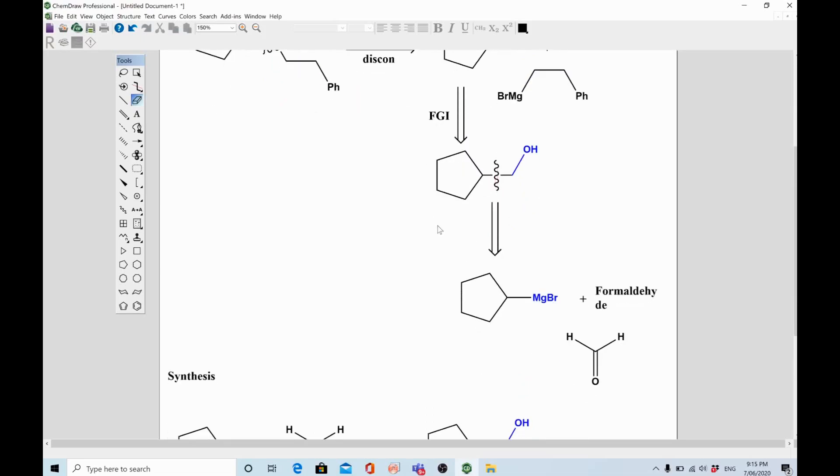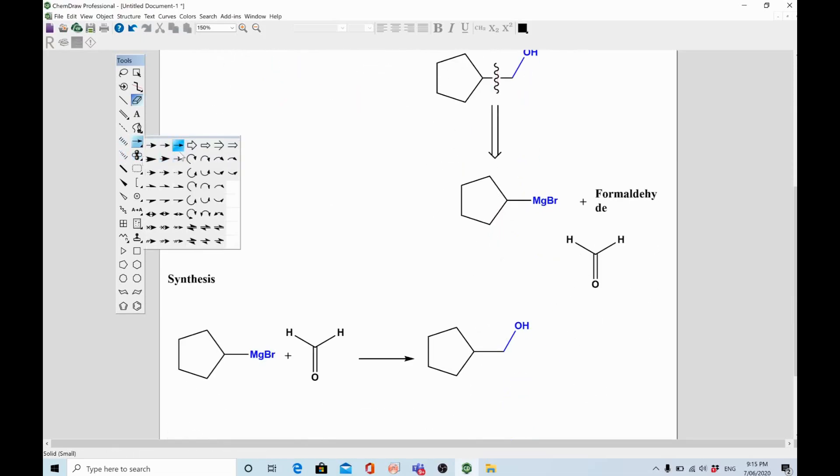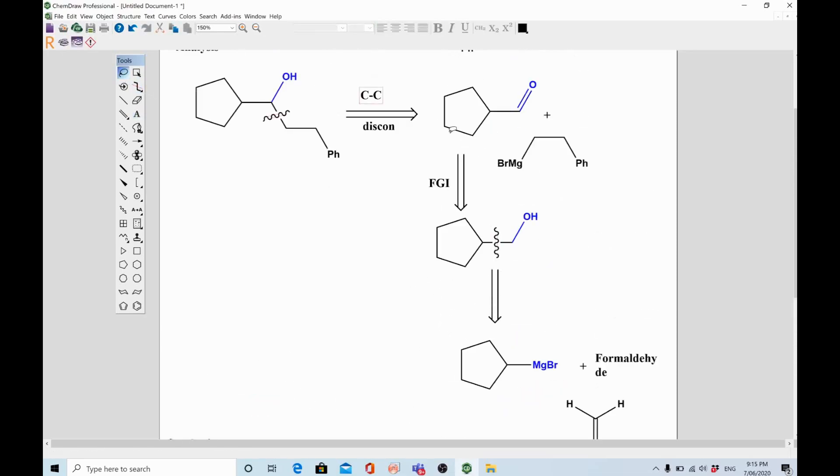So to do so, we can simply do oxidation of alcohol using PCC as oxidizing reagent. So that is oxidation. It will oxidize alcohol into this aldehyde.